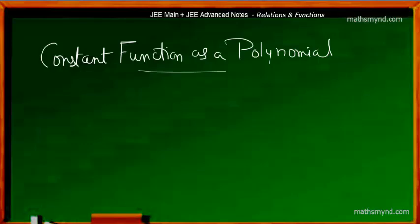What kind of a polynomial is a constant function? We know that a polynomial is generally represented as f(x) = a_n x^n + a_{n-1} x^{n-1} + ...